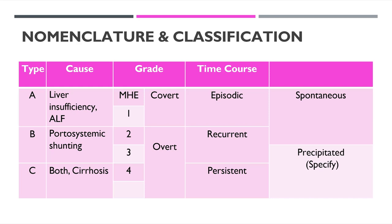Recently, minimal HE and grade one have been combined and called covert hepatic encephalopathy, as opposed to overt. The naming is simple: covert is the opposite of overt. As for time course, it could be episodic, recurrent, or persistent, and finally either spontaneous or precipitated.